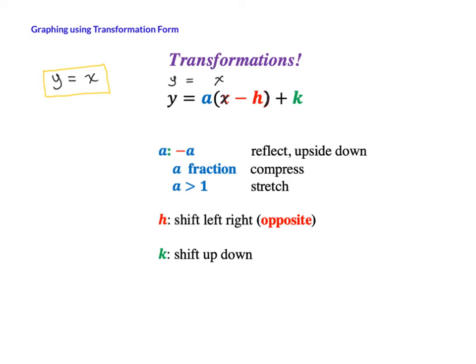Transformation form is used to graph something quickly. It is called transformation form because we're literally transforming a normal old equation like y equals x, and we're adding things to it — we're adding components. We're going to add an a, an h, and a k to this normal old boring equation y equals x. When an a, h, or k is present, that means the same equation has been transformed.